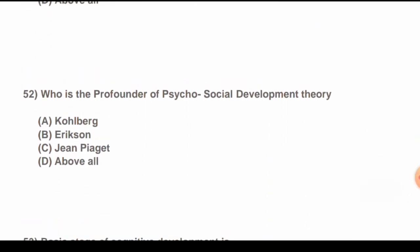Question 52: Who is the profounder of psychosocial development theory? Options are: A) Kohlberg, B) Erikson, C) Jean Piaget, D) All of the above. The correct answer is B) Erikson.